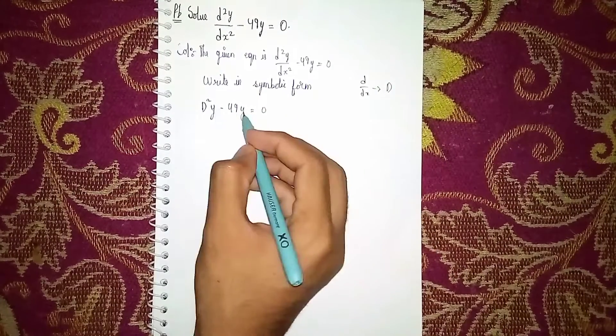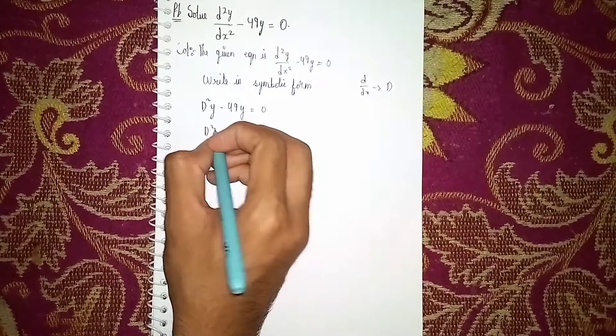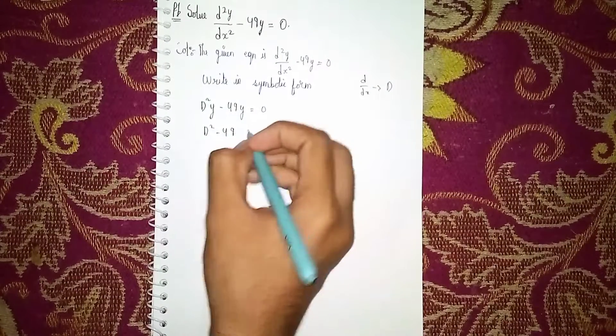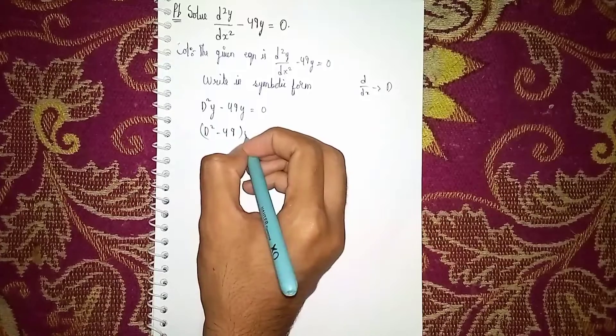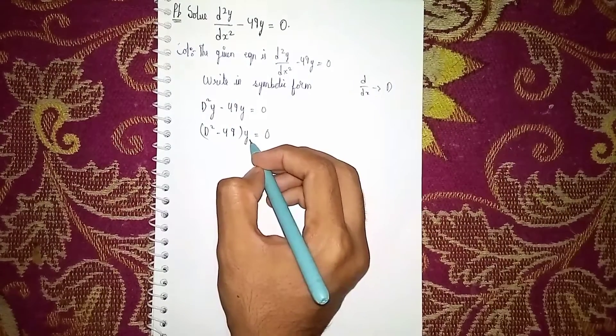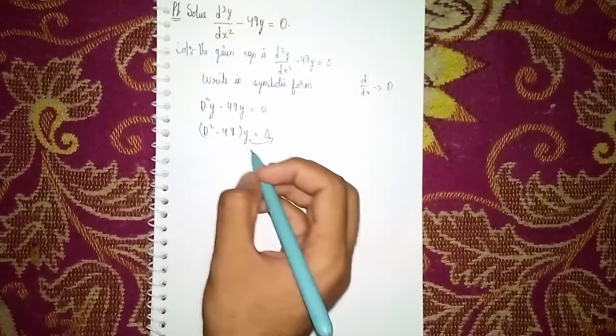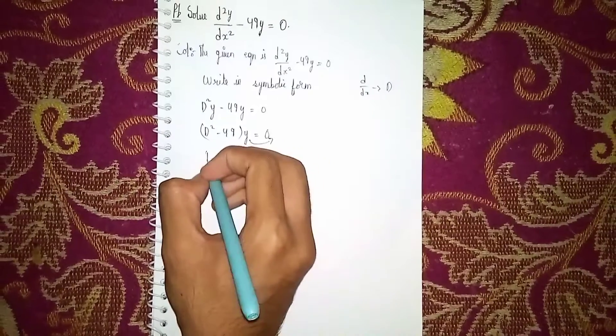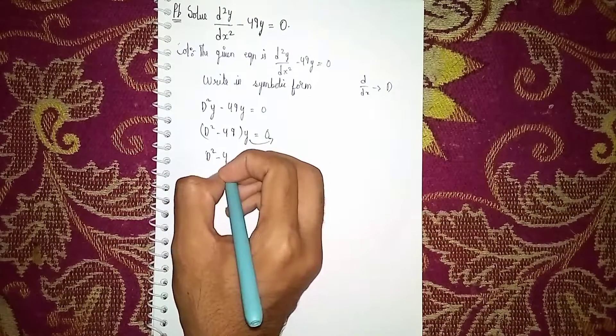You can see we can take y common here, so D² - 49 times y = 0. Now send this y to the other side; it will become 0. Then our equation is D² - 49 = 0.